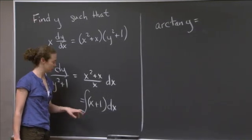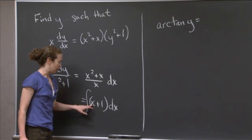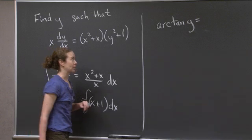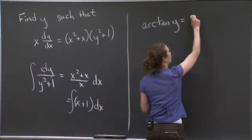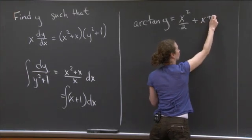And on the right-hand side, what do I get? Well, this is a nice, easy thing to integrate. When I integrate x, I get x squared over 2, and here I just get an x, and then I should add in my constant. So x squared over 2 plus x plus a constant.